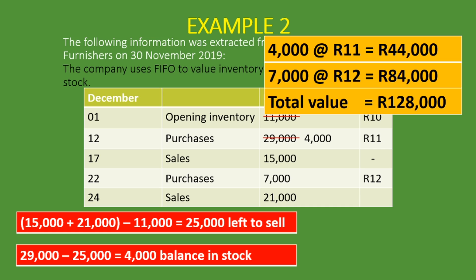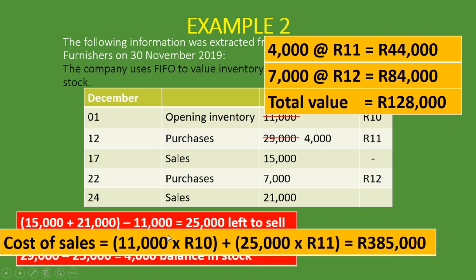Now let's do the cost of sales again. You can pause here, try the cost of sales yourself, and then come back and compare your answer. So here's how we do it: we sold the 11,000 units at 10 Rand, and then from the 29,000-unit batch we took 25,000 units at 11 Rand. So: 11,000 × 10 plus 25,000 × 11 gives us a cost of sales of 385,000 Rand.